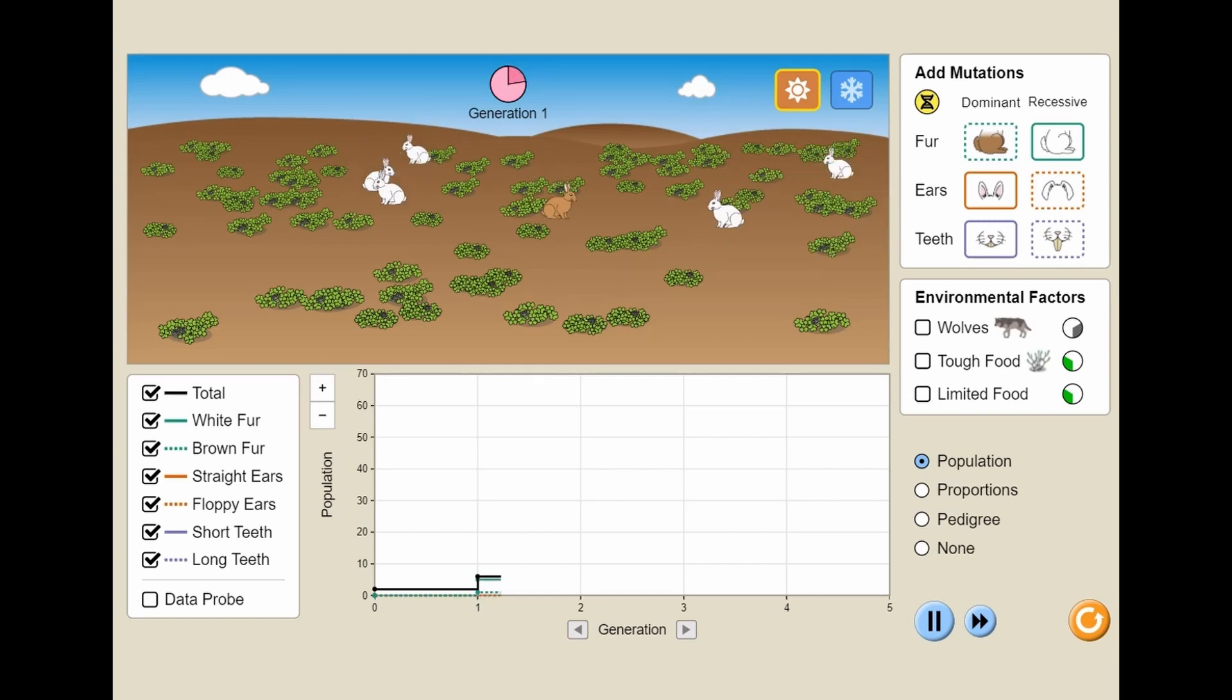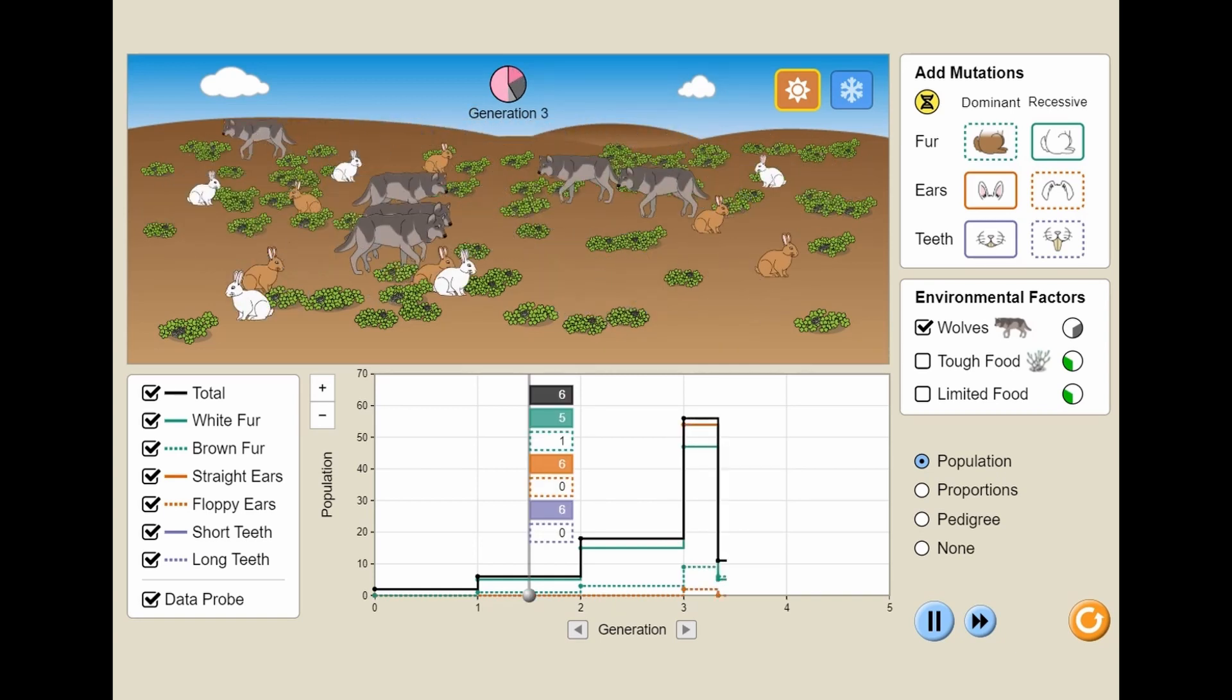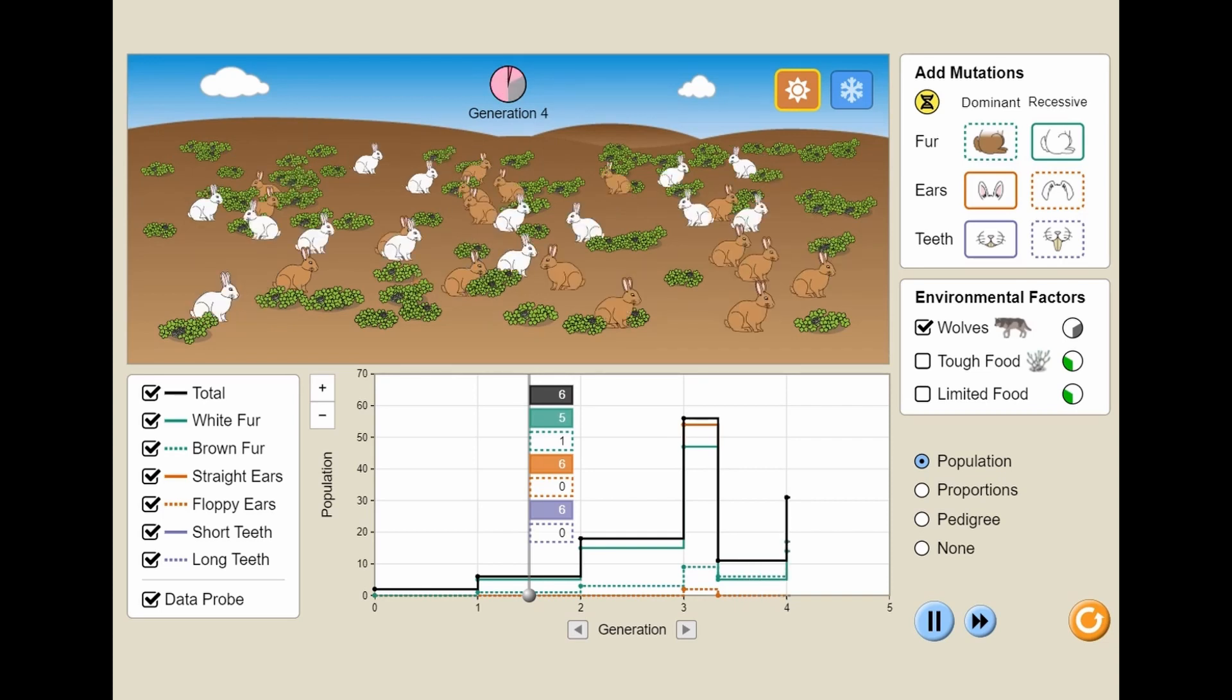In this simulation, you will explore how organisms with different traits survive various selection agents within the environment. Challenge yourself to determine which mutations are advantageous with various selection pressures, which mutations don't offer any benefit, and how to create a stable population of bunnies.